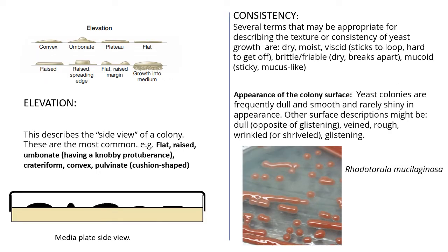Then comes elevation. You need to take your media plate to eye level and observe the side view of your colony — that is how you will determine the elevation. Common elevation types are: flat, raised, umbonate, convex, and pulvinate, which is a cushion shape not shown in the picture.